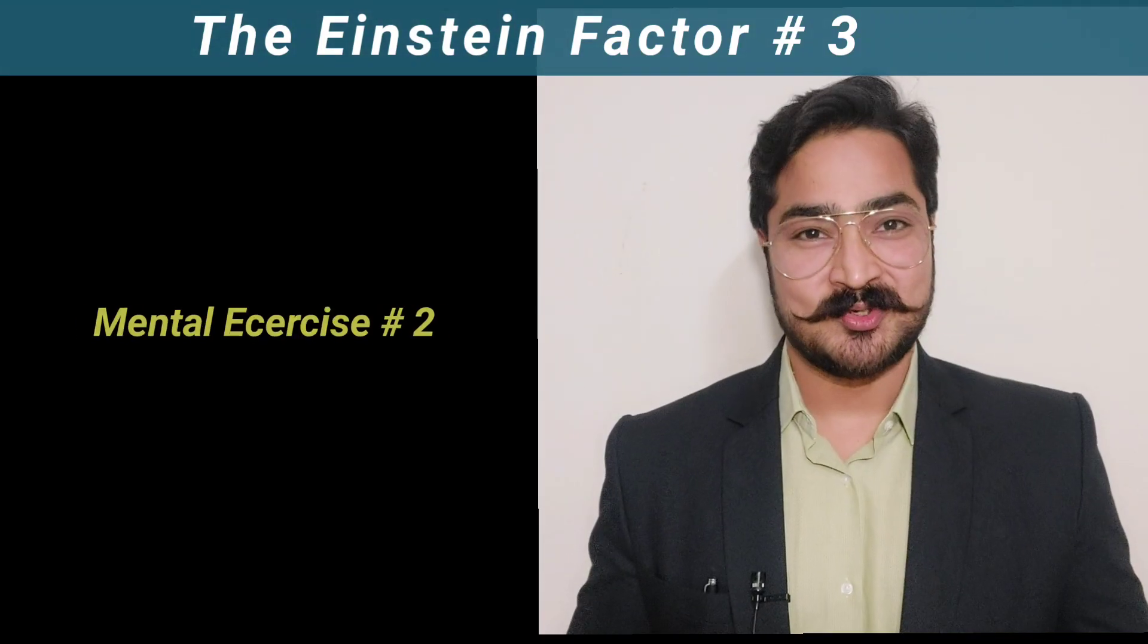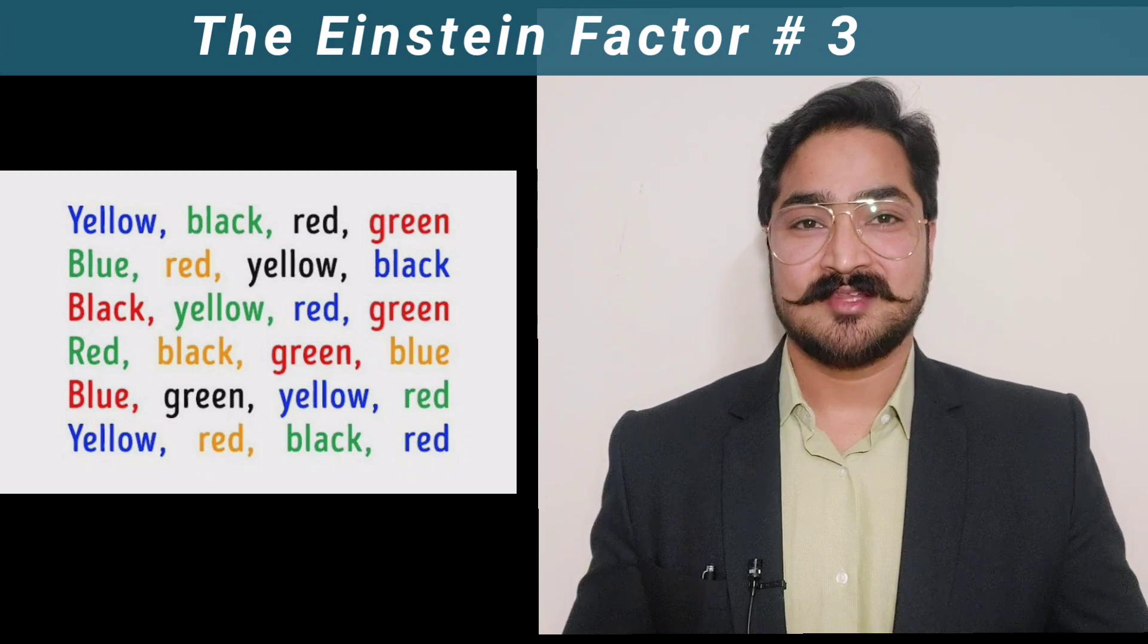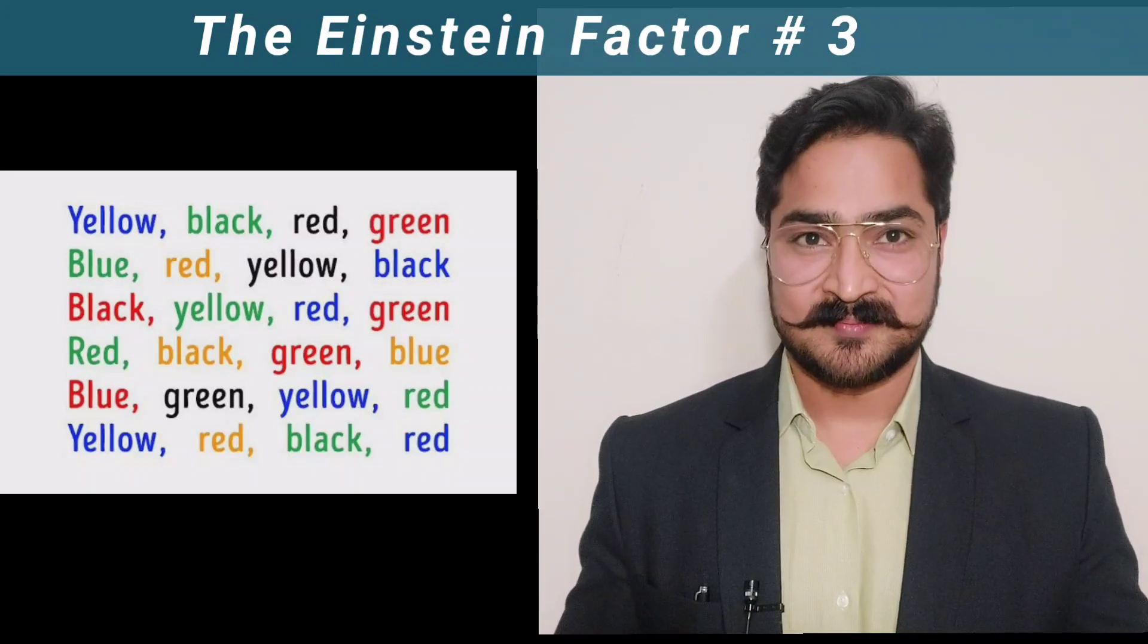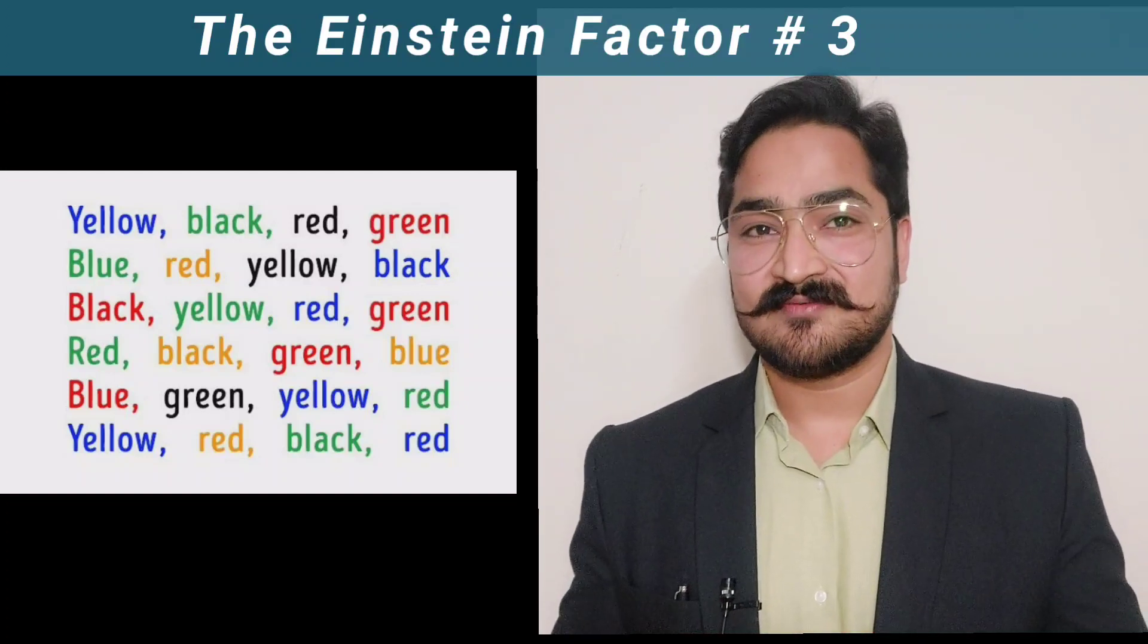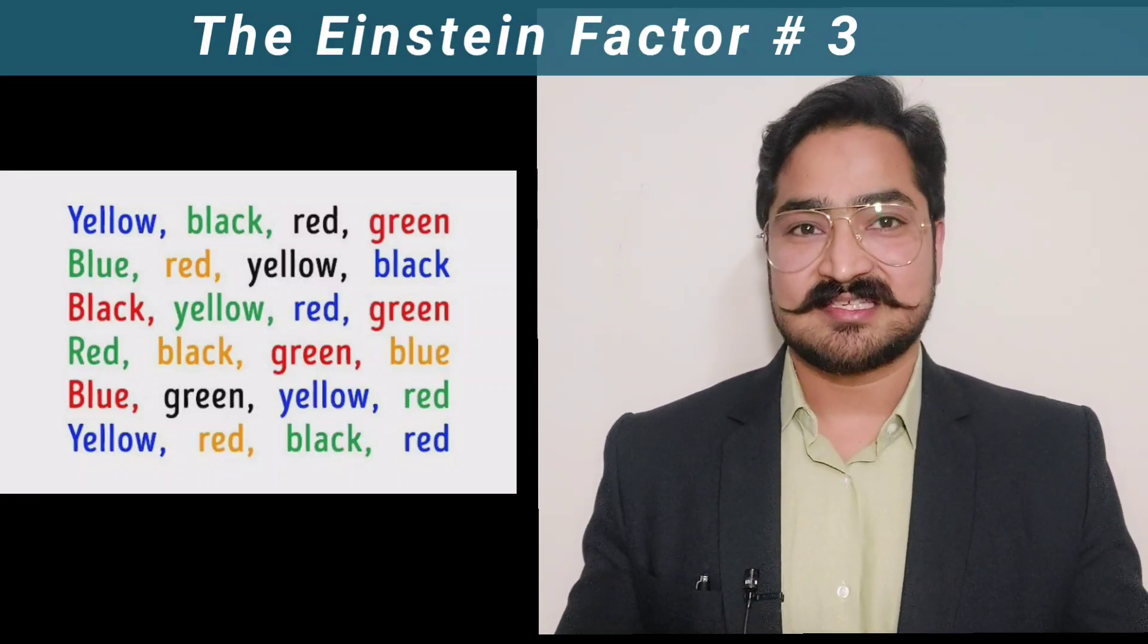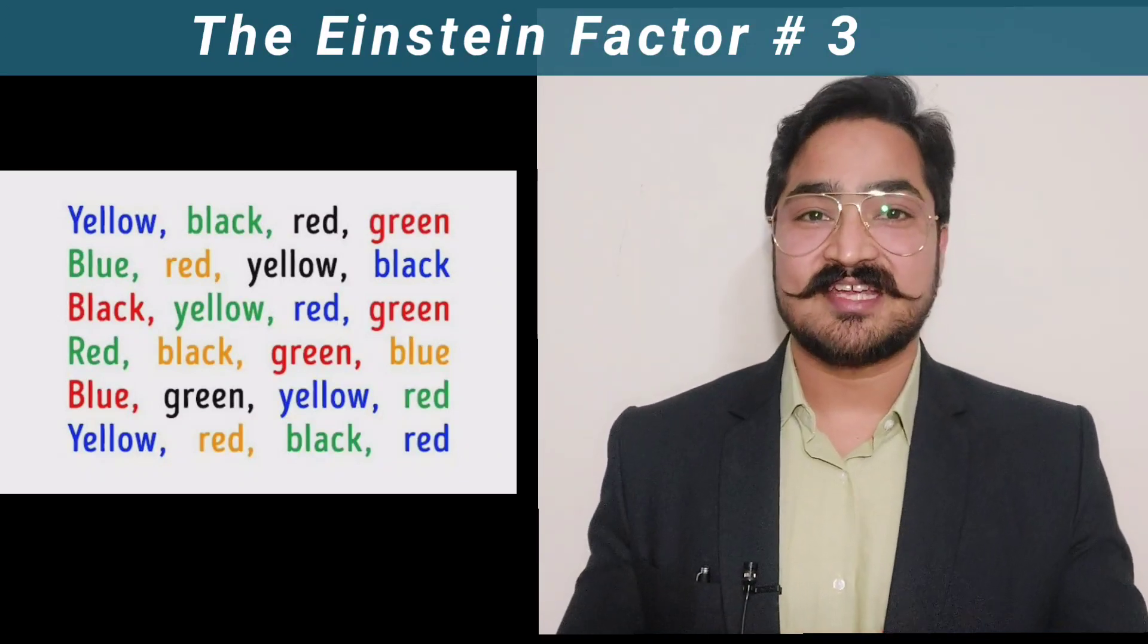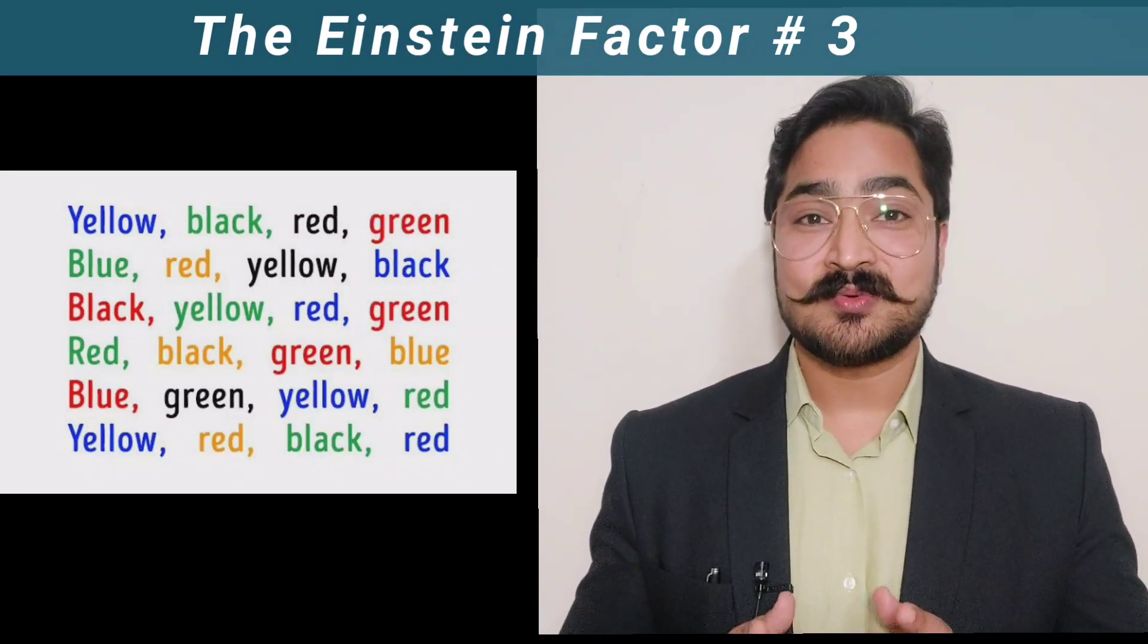Now exercise number two: you need to try to look at the text which is on the screen with various colors. However, the text may read something else - the color may differ from that. Now you need to identify the color of the text and not read the text itself. For example, the letters may say 'red red' but the color of the text may be yellow. In that case, you need to read yellow.